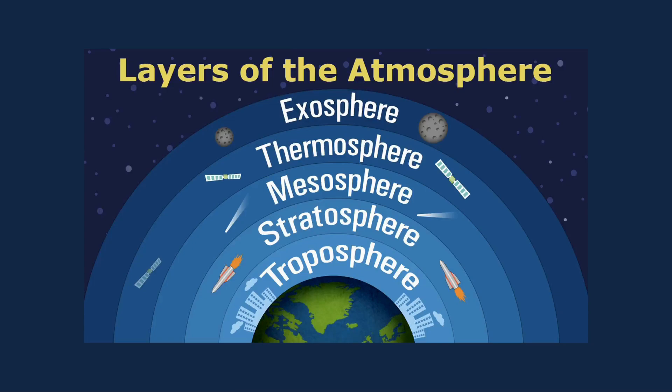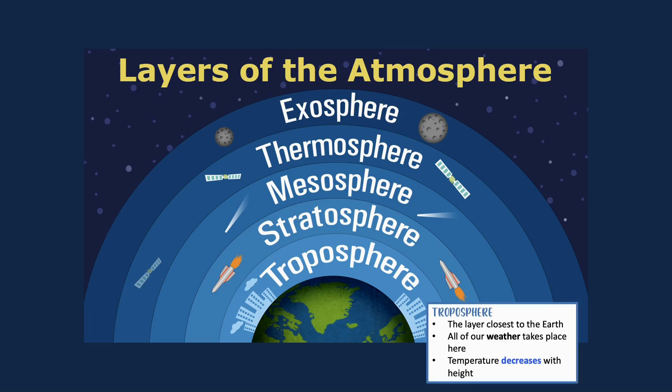Let's look at the layers of the atmosphere. We have five layers: the troposphere, stratosphere, mesosphere, thermosphere, and exosphere. The troposphere is the closest layer to Earth and that is where all weather takes place. The temperature also decreases with height. If you think about the difference between sea level and Mount Everest, Mount Everest has very thin air — the air molecules are not as dense — and that is why as you move higher up, the temperature decreases because there are fewer gas particles able to hold on to the heat.